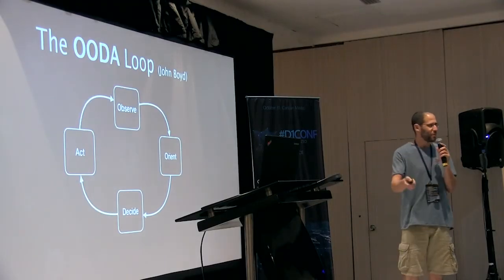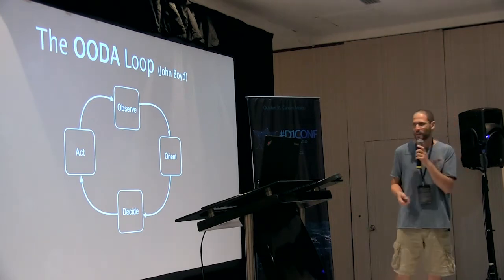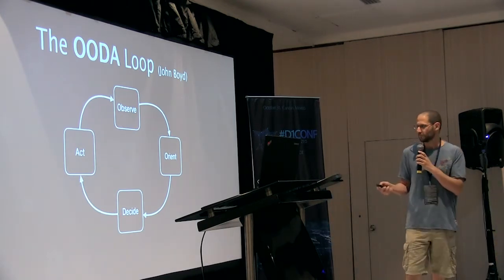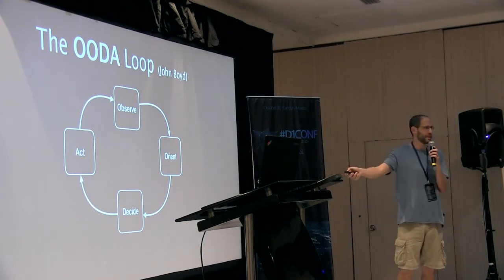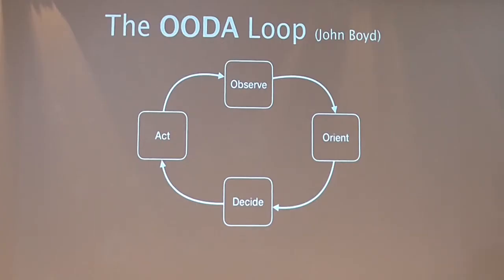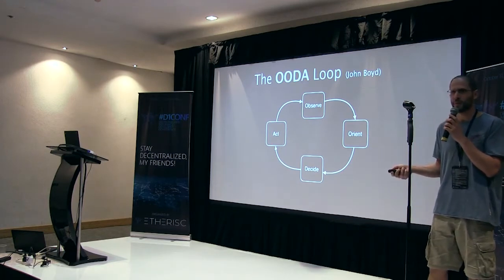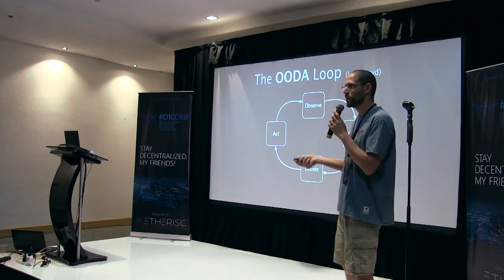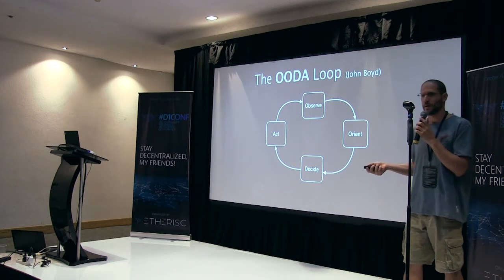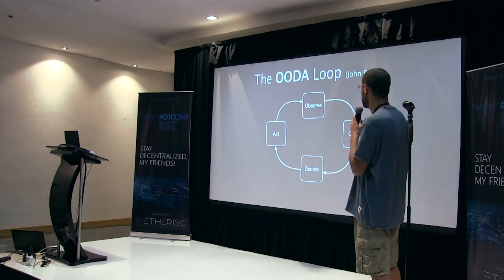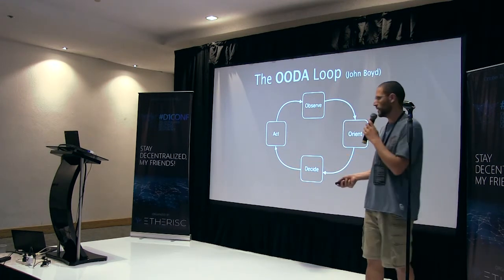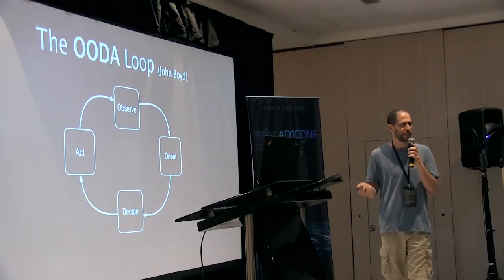Before we dive into decentralized decision-making, what is a decision-making process? One of the definitions given by Boyd is referred to as the OODA loop. In the OODA loop, you have four stages. You need to observe — you observe the environment, you sense it, you measure it. Then you orient yourself with respect to that environment, which means you're mapping all the space of possibilities and calculating or predicting the outcome of each possibility. Then you make your choice — this is a computation, this is where your value system is. You're making a choice out of all the space of possibilities, and finally you act. Then you return to this feedback loop again and again. This is the OODA loop.